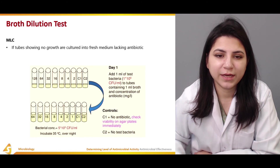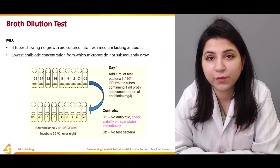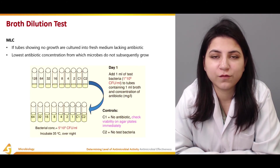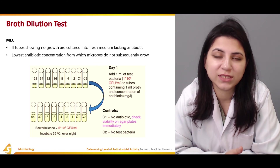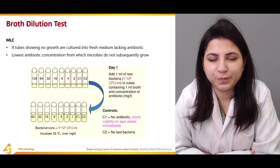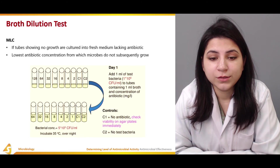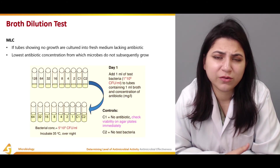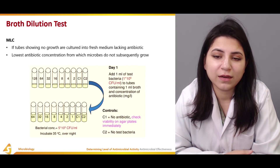The MLC is determined by culturing tubes showing no growth into fresh medium lacking antibiotics; the lowest antibiotic concentration from which microbes do not subsequently grow is the MLC. Controls are also used: one plate with no antibiotics to check bacterial viability, and another with no bacteria to confirm no contaminating pathogens. Bacterial colonies are incubated at 35 to 37 degrees Celsius, the ideal condition for growth, usually overnight, before determining the MIC and MLC.